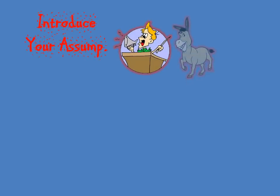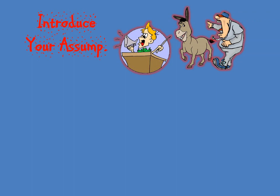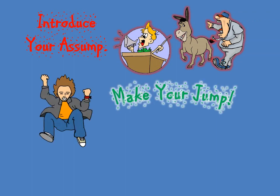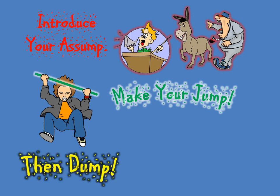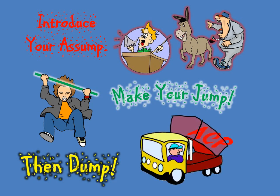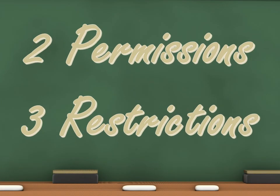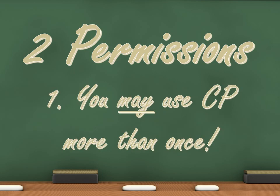No matter how technically you explain conditional proof, it still comes down to three basic things: introduce your assumption, make your jump, and discharge the assumption when you're done. Now, there are two things you're allowed to do with conditional proofs and three things that you're not. These are going to seem intuitive, so don't be too intimidated by the fact that you need to memorize five rules. The first permission is: you may use conditional proof more than once.